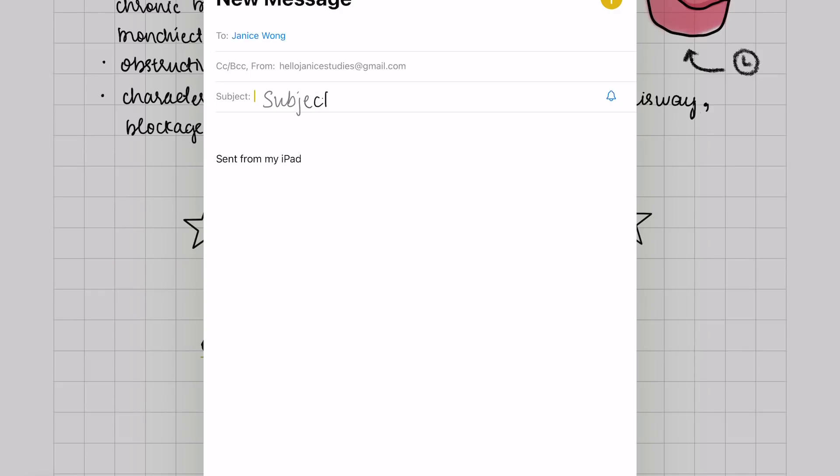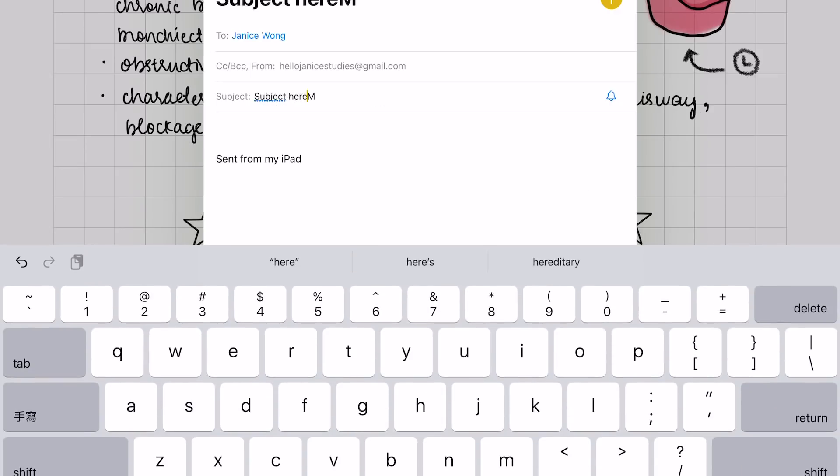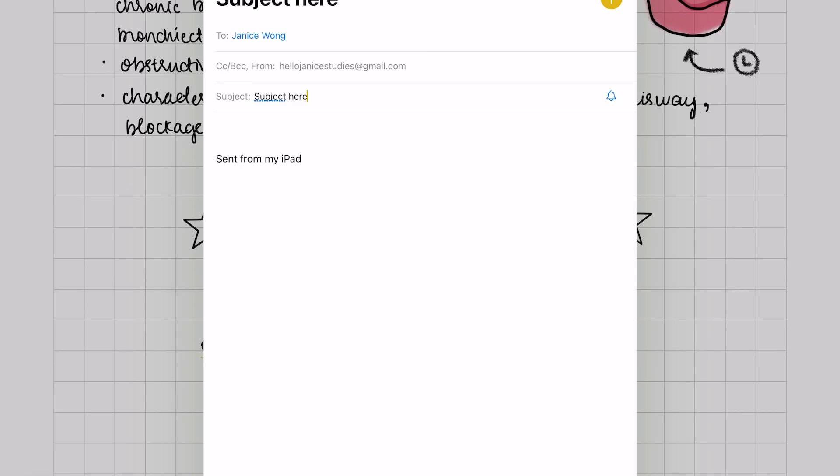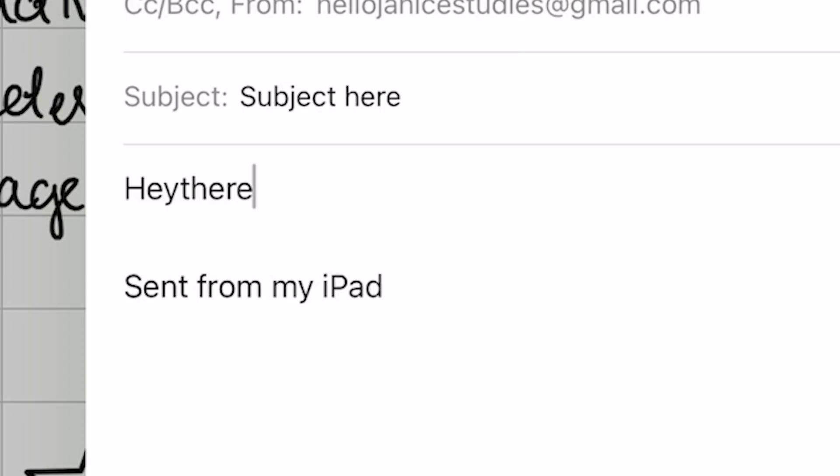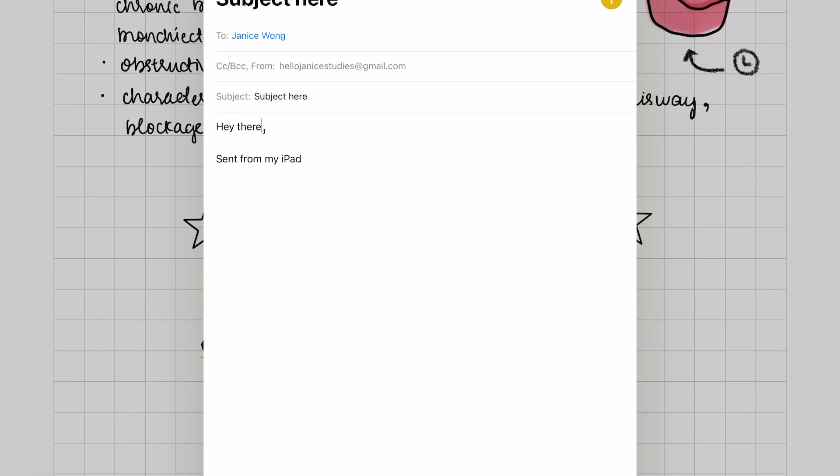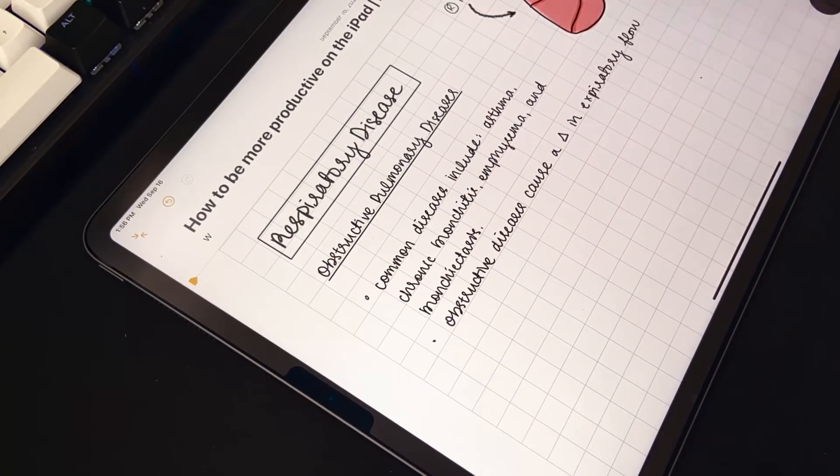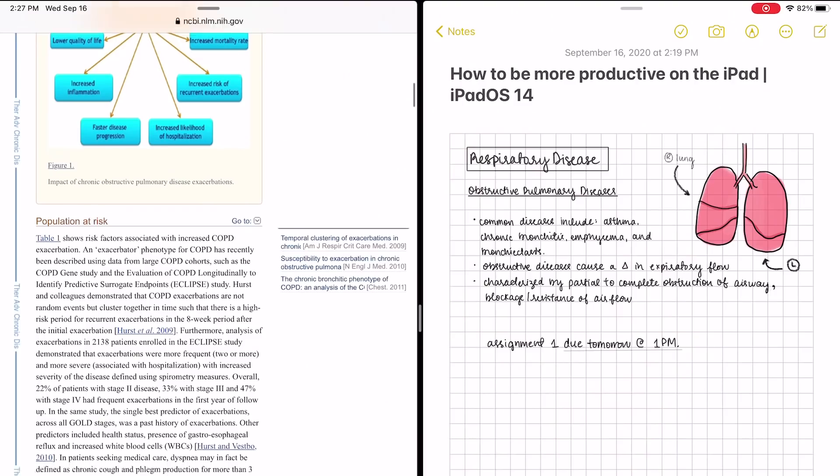Using Scribble, you can write in the subject. If you make a mistake, you can simply just scratch over it and it'll be deleted. If you've forgotten a space in between words, you can draw a line in between the words to make one. These features just make working with an Apple Pencil so much more efficient because there is no need to put it down to do what you need to do.